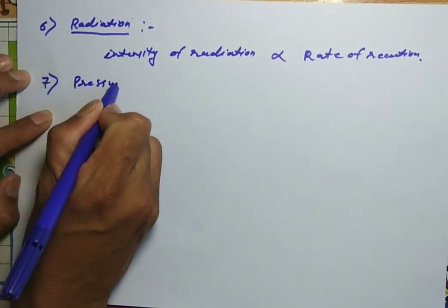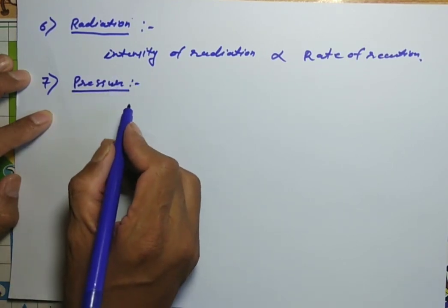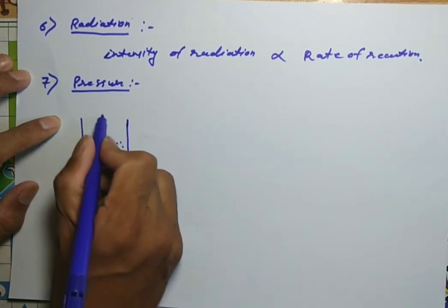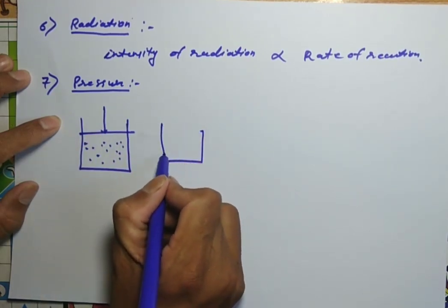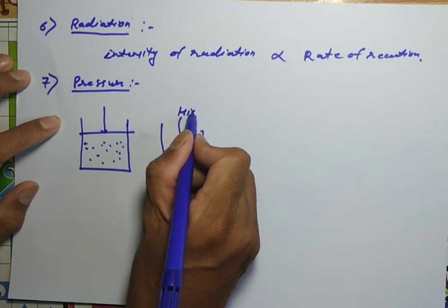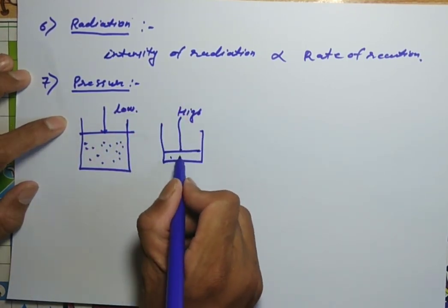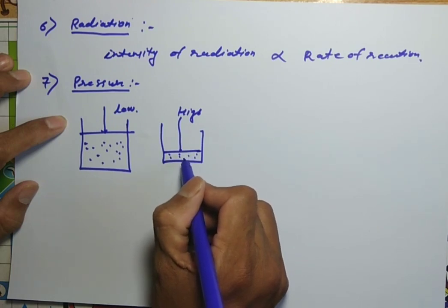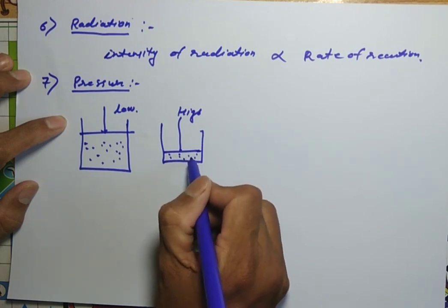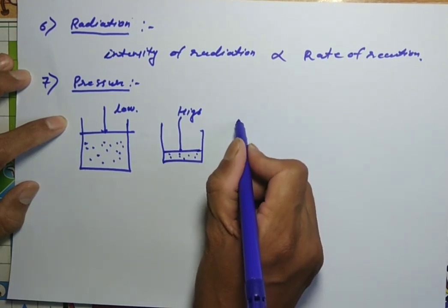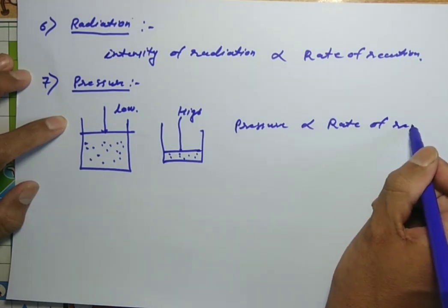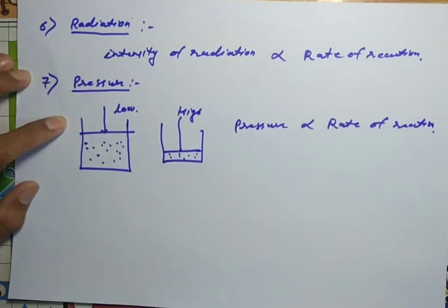The seventh factor is pressure. Consider a container with gas molecules. When pressure is increased, the gas molecules are compressed, increasing the probability of interaction and collision. Therefore, as pressure increases, the rate of reaction also increases. These are the various factors which affect the rate of different chemical reactions.